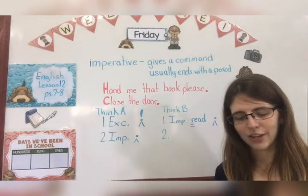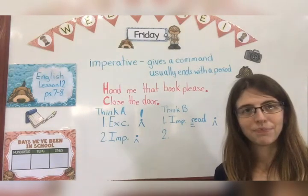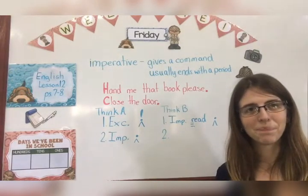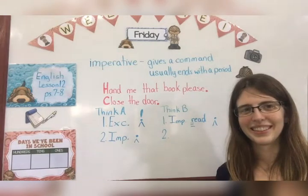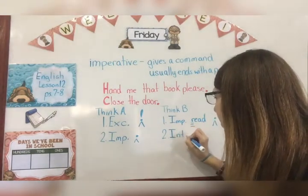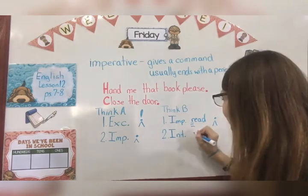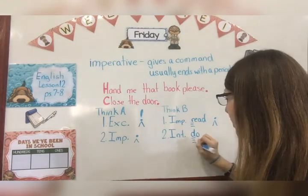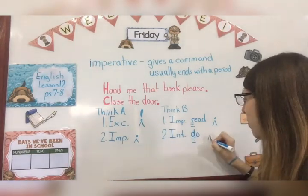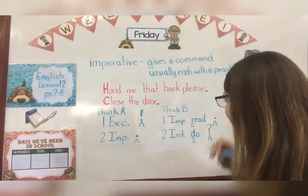Let's do number two together and then you can do the rest after the video is done. Do you know that gray wolves once lived in most of North America? It's interrogative, right? Because it's asking a question — asking if you know something. So write interrogative in the blank. What letter should be capitalized? That's right, the D in Do. Put three little lines under the D in Do. At the end of the sentence, a question mark goes there because the sentence is interrogative.